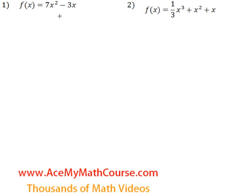Now let's find the critical numbers for each function, starting with this one on the left. f of x is equal to 7x squared minus 3x. And remember that the critical numbers are where the derivative doesn't exist or it is equal to 0. So let's get started.